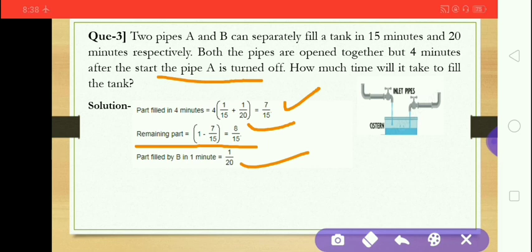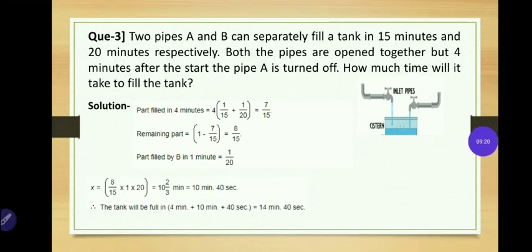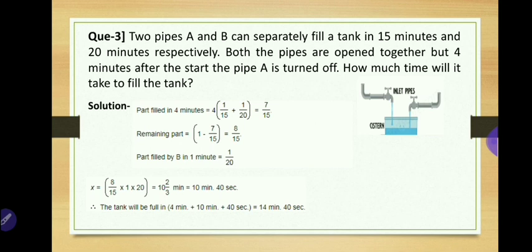The time for B to fill the remaining 8/15 is found by taking the ratio: (8/15) divided by (1/20) equals 8/15 multiplied by 20, which equals 10 minutes and 40 seconds. So pipe A worked for 4 minutes, then pipe B worked for 10 minutes 40 seconds, giving a total of 14 minutes 40 seconds. This is the general conceptual method to solve the problem.